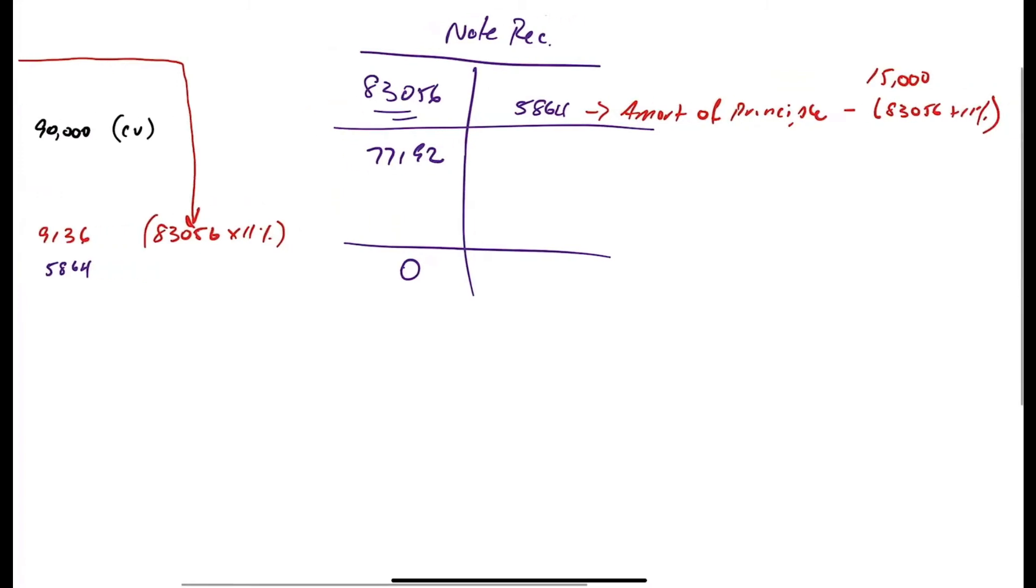...because this $15,000 is a blended payment between principal plus interest. And if you look at a car loan or an amortization of a mortgage, the amount of interest with each payment gets smaller and smaller, and the amount of principal gets bigger and bigger.